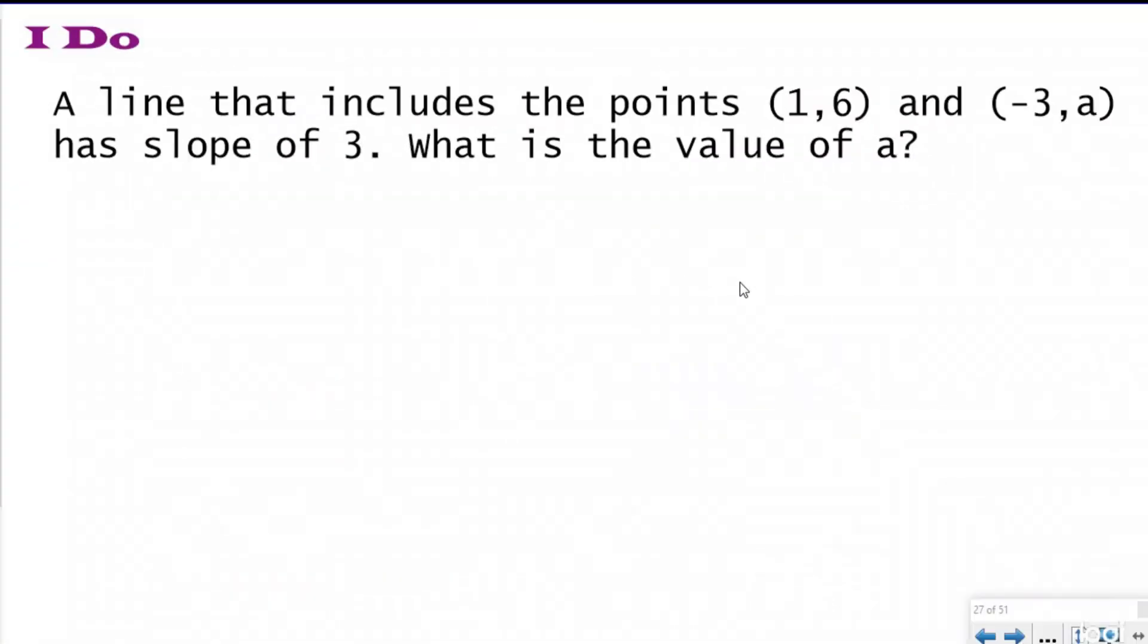So let's solve this question, and then we can actually check it using a coordinate plane just to make sure that we're not crazy. The line that we're going to make includes the points 1 and 6 and negative 3 and a. So we're missing our second y coordinate and it has a slope of 3. What is the value of a? So I know that my slope equation is y2 minus y1 over x2 minus x1. So I'm going to use that and plug in what I know. So now I know that my slope is 3. So M is 3 and 3 is going to equal—I don't know my first one, so I'm going to use my variable a for that variable. So a minus 6 over x2, which was negative 3, minus x1, which was 1.